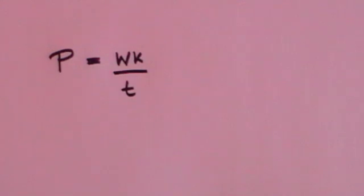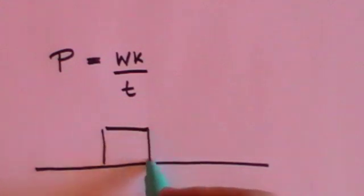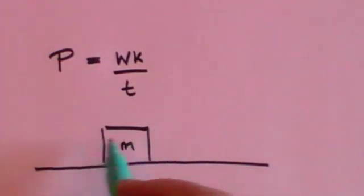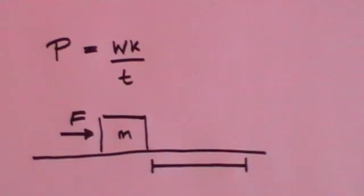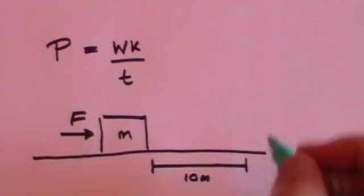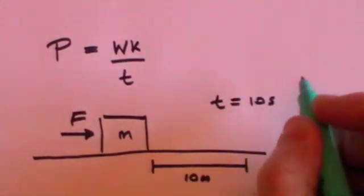It's the work done divided by the time it takes you to do it. Let's say we have our famous block which has a mass M, and we apply a force F to it, and we push it over a distance of 10 metres, and we take 10 seconds to do that.